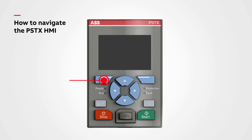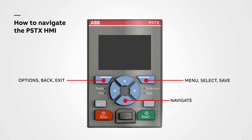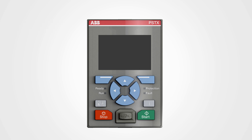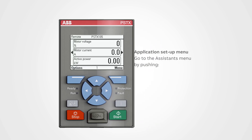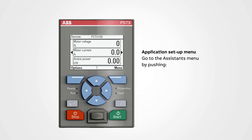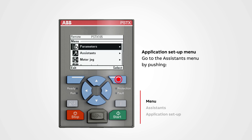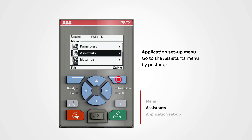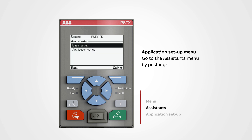Press the top left button for options, back and exit. Press the top right button for the menu, select and save. Use the middle buttons when you need to navigate. For application setup, go to the assistance menu by pushing the menu button, navigate to assistance, then push select. Go to application setup and then push select to enter the menu.